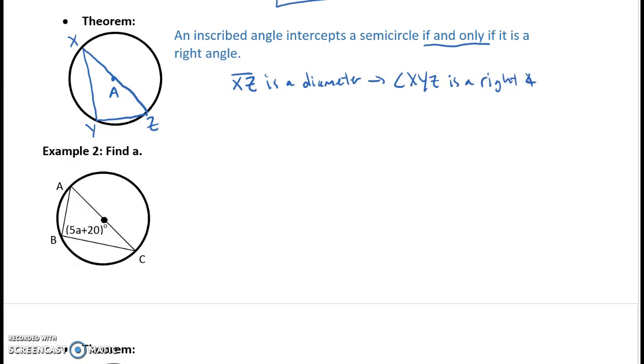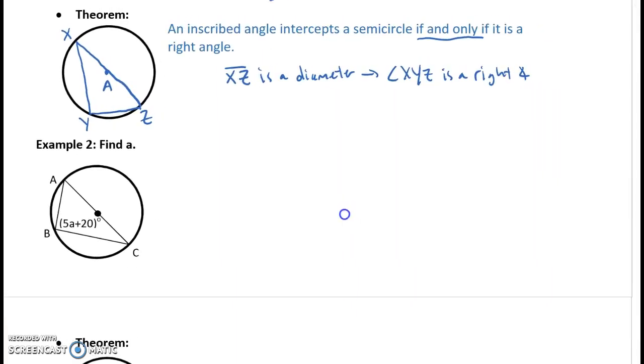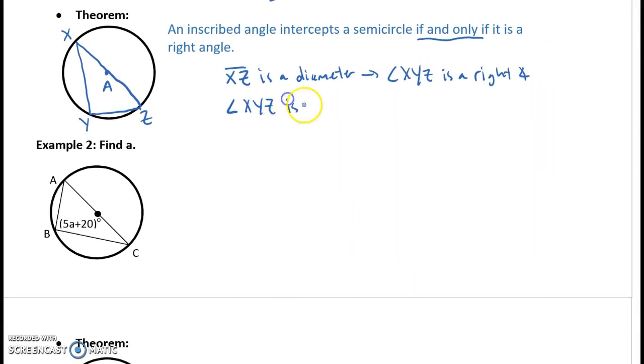But remember, since it's a biconditional, it goes both ways. So we could also be told that, hey, if angle XYZ is a right angle, then XZ is a diameter. Right? Because that's what makes a semicircle. So that one's a pretty clear one. Just make sure you check for that dot in the center. We need to make sure that's a diameter.